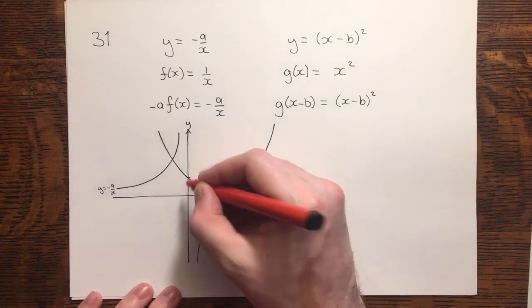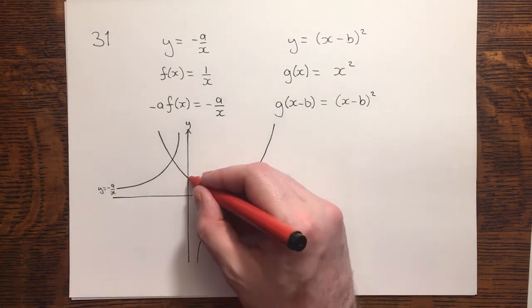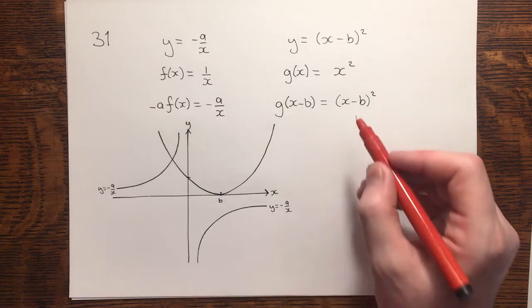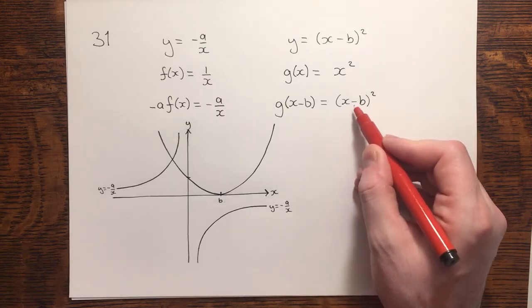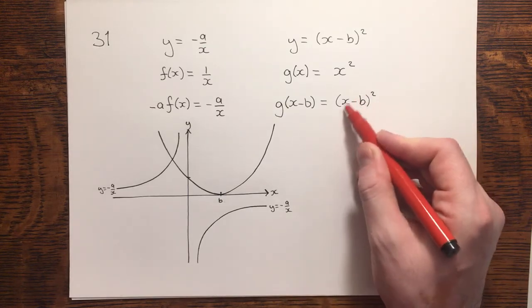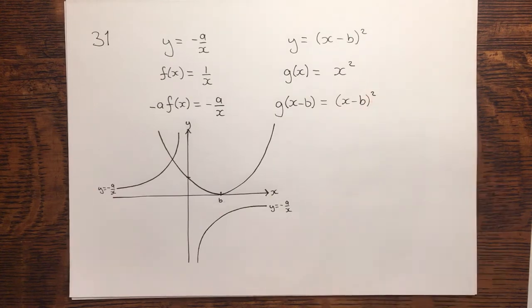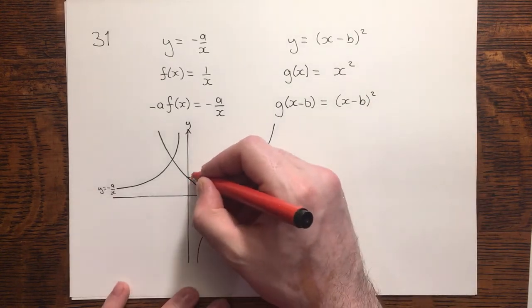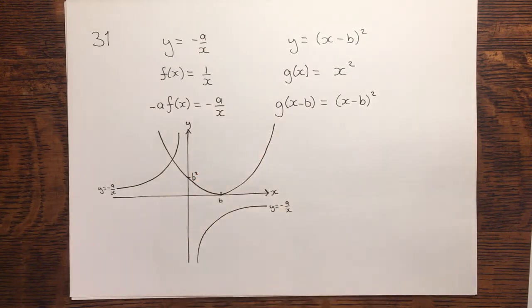What's slightly harder to calculate, but not particularly difficult, is this intercept here. At this intercept here, we're on the y-axis. Therefore, the x value will be 0. If I substitute that in, x is 0, I will have 0 minus b, so just minus b, squared. Minus b squared is b squared. And that will be the coordinate of the y-intercept.